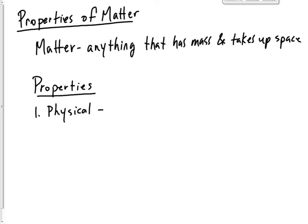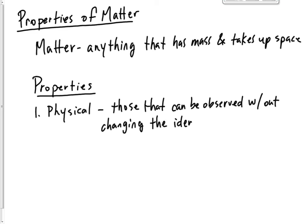Okay, physical properties, those that can be observed without changing the identity. So things like color, texture, mass, anything that you can tell about the substance without changing what it is.